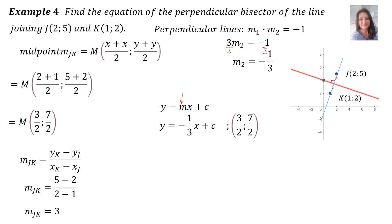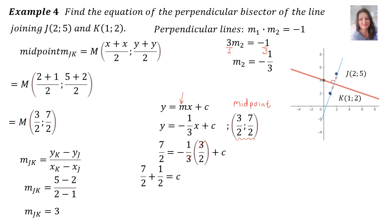Into y = mx + c we substitute the perpendicular gradient minus a third. Since it's the perpendicular bisector, the coordinate we use is the midpoint (3/2, 7/2). Substituting y = 7/2 and x = 3/2 — the 3's cancel leaving a half, which walks across to the left, giving c = 4. Therefore the equation of the perpendicular bisector is y = minus a third x plus 4.